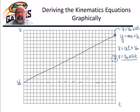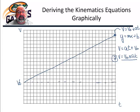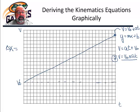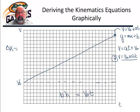To find position, we use the area under the curve. We need to add two areas together — the rectangular area and the triangular area. So delta x is equal to the area of the rectangle. The area of the rectangle is base times height, where the base is time and the height is v₀, representing the initial velocity.